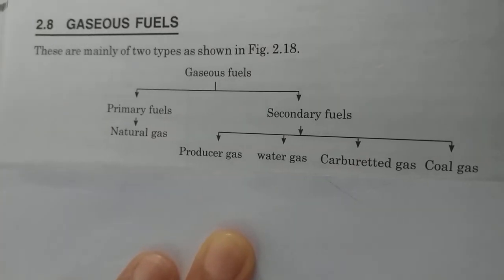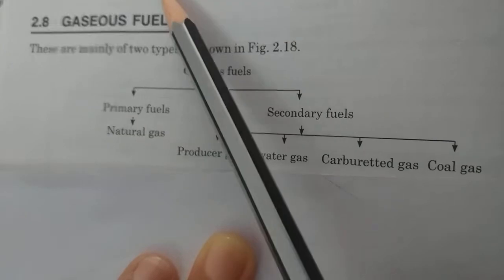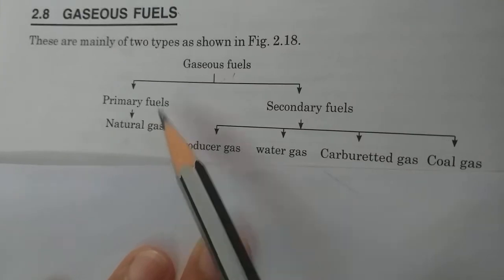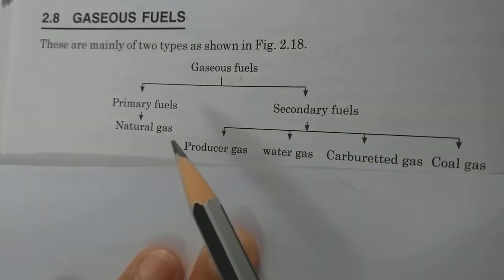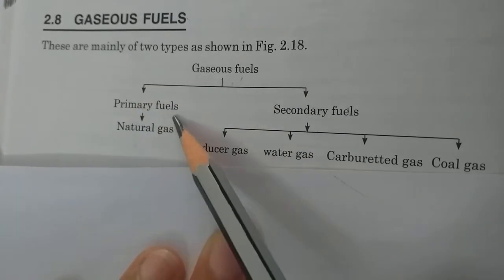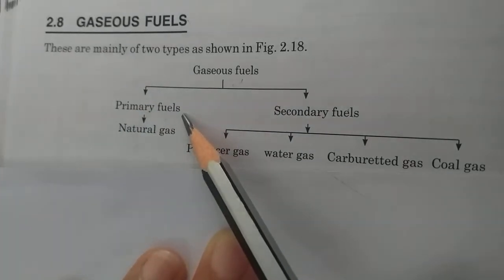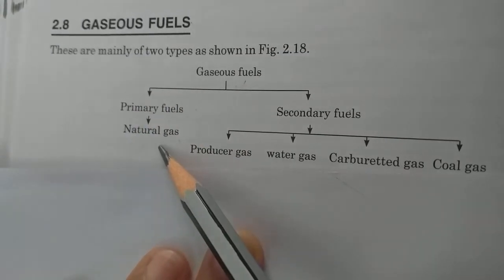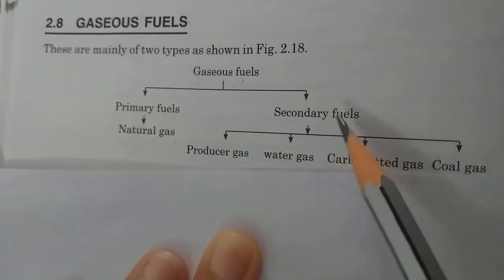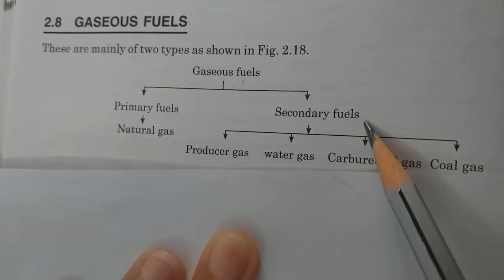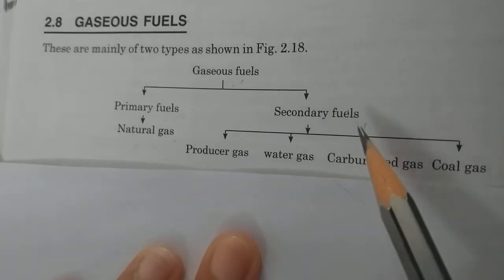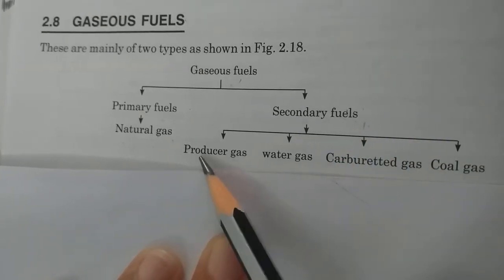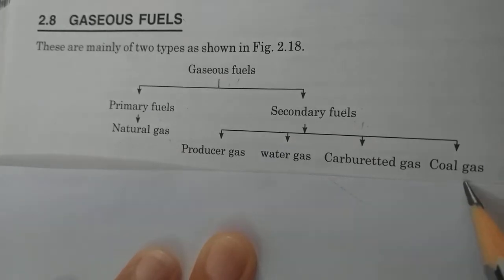Hello students, today we will start our class on gaseous fuel. Classification of gaseous fuel has two types: primary fuel and secondary fuel. As we discussed in last class, primary fuel is a fuel which originated from the vital force of nature. An example of primary fuel is natural gas. Secondary fuel is also called artificial fuel or man-made fuel.